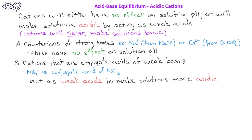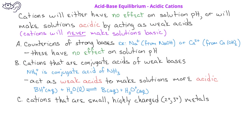Generally, these type of cations will have the formula BH⁺, and they'll react based on the general ionization equation: aqueous BH⁺ plus liquid H₂O will be in equilibrium with the weak base B and the hydronium ion H₃O⁺ aqueous. The third type of cation are cations that are small and highly charged metals. When we say they're highly charged, that means they'll have a 2+ or 3+ charge. Examples would be the aluminum 3+ ion or the iron 2+ ion. These small, highly charged metal cations will make solutions acidic.